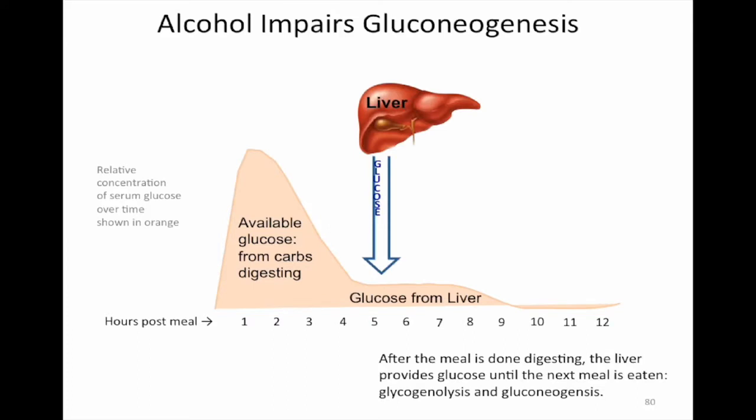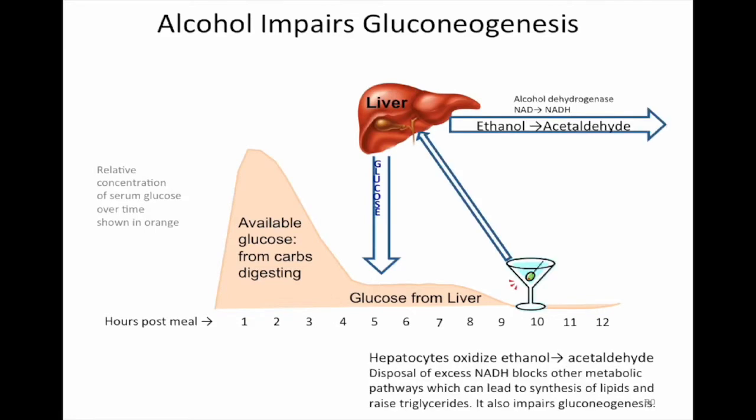Then you switch to glycogenolysis and gluconeogenesis, and glucose is being supplied from the liver to keep the person's blood sugar stable. Imagine drinking alcohol on an empty stomach. Alcohol is processed in the liver.